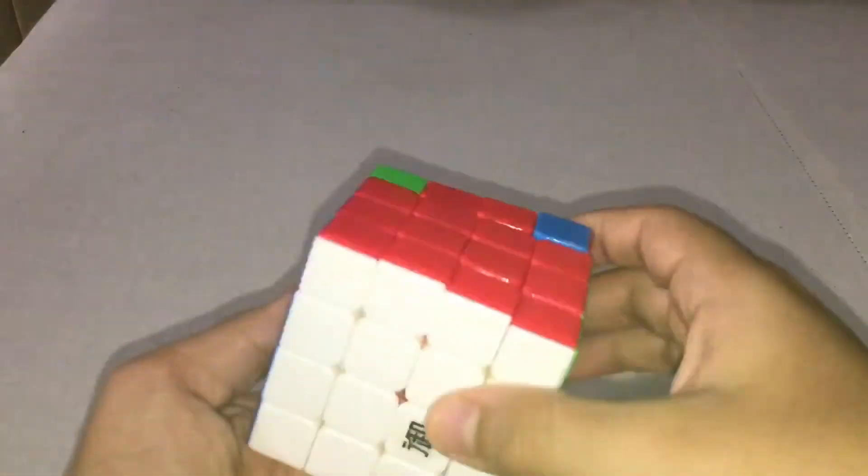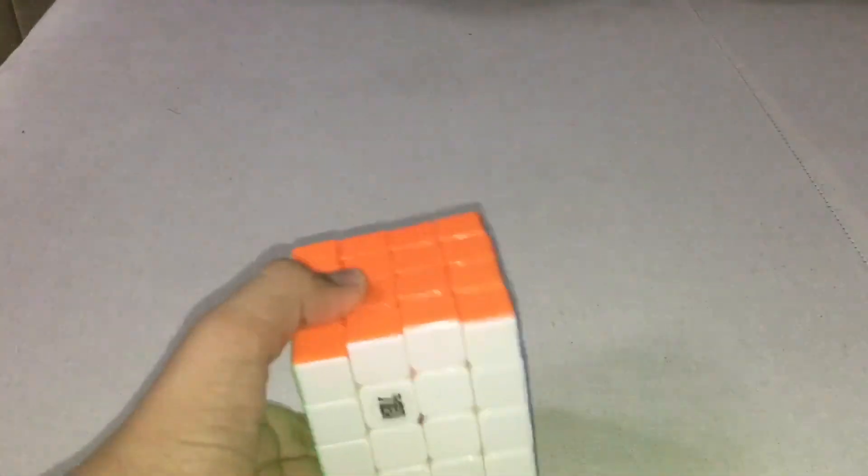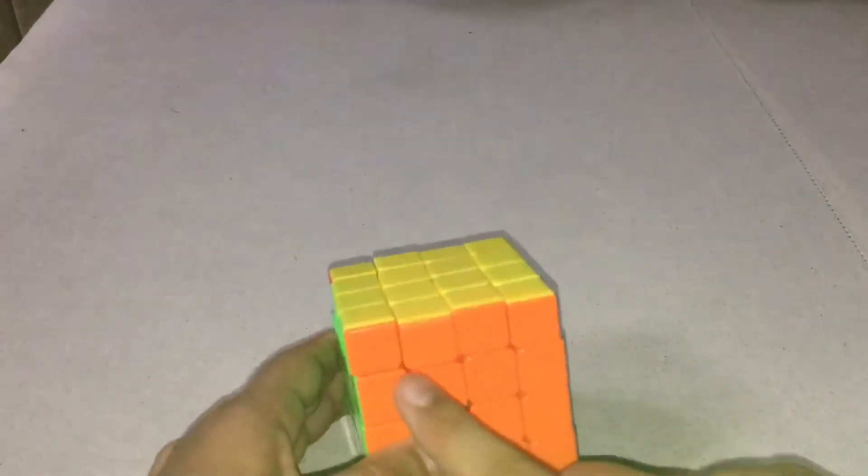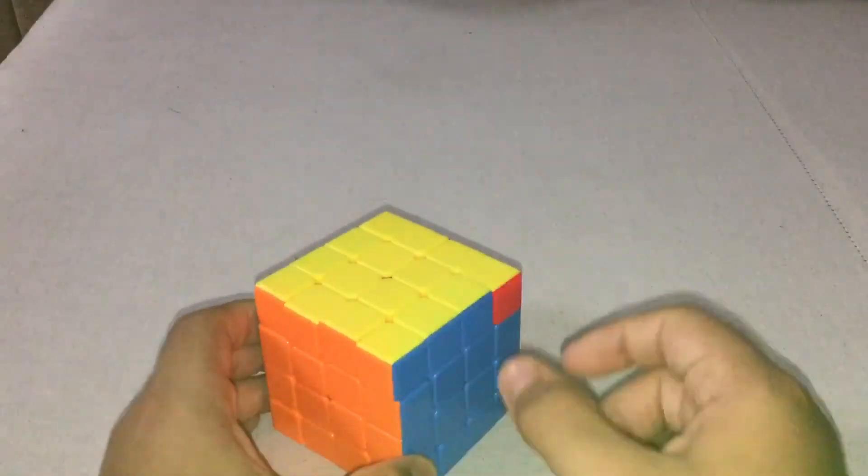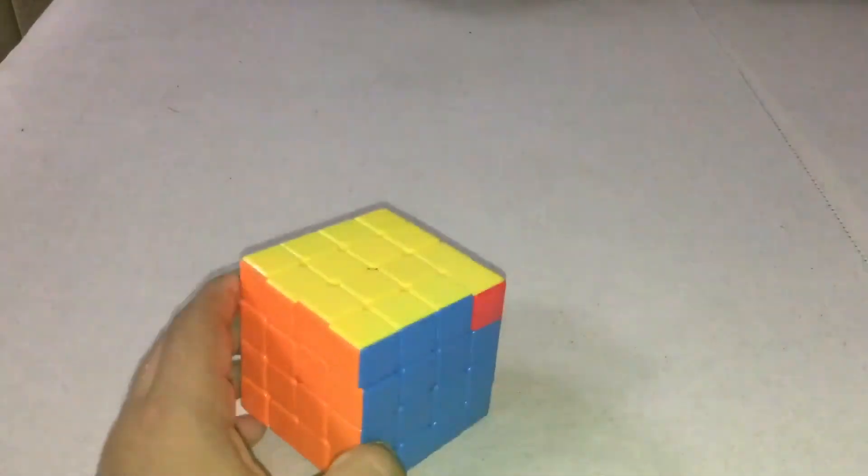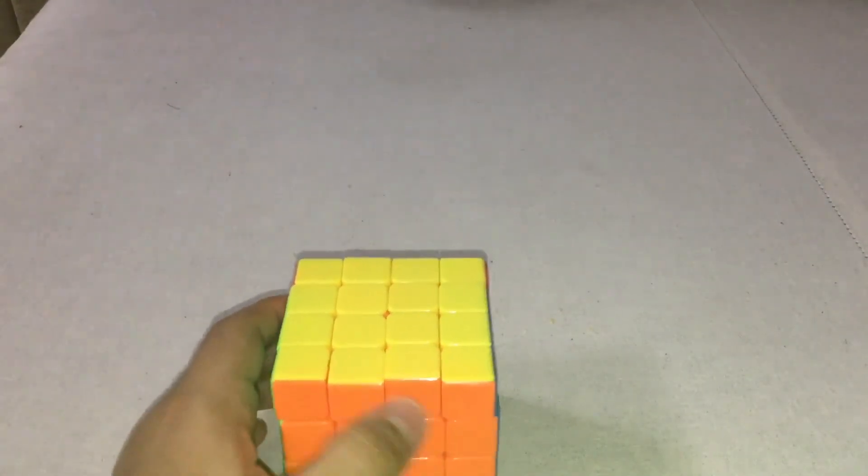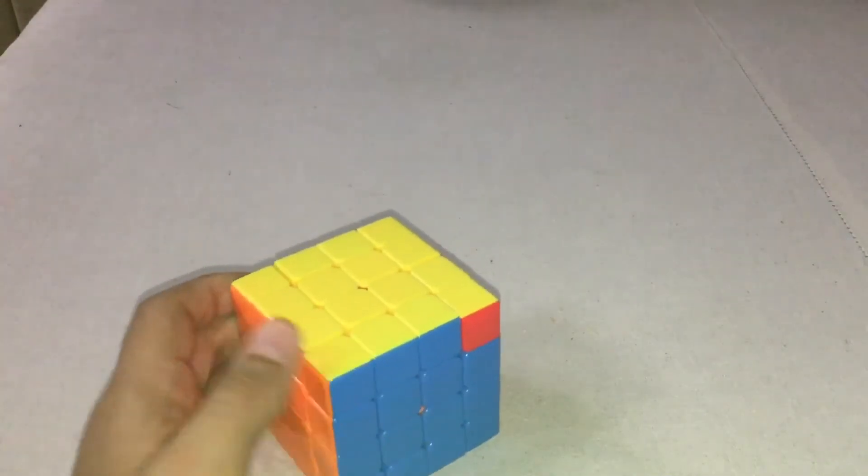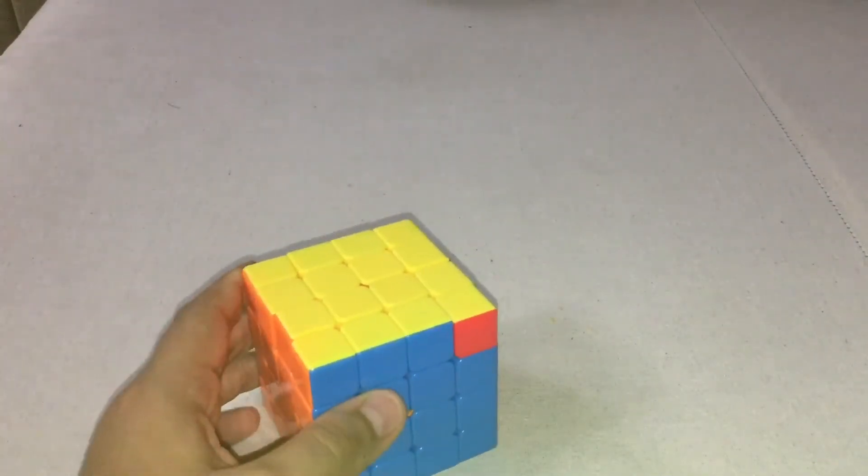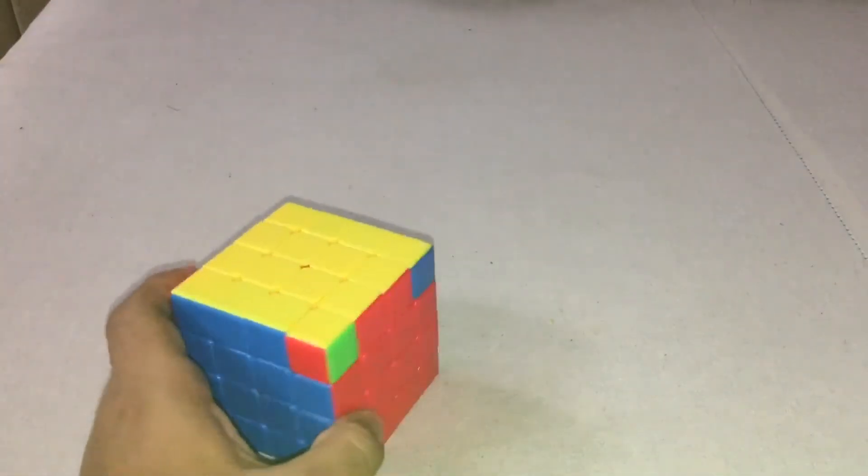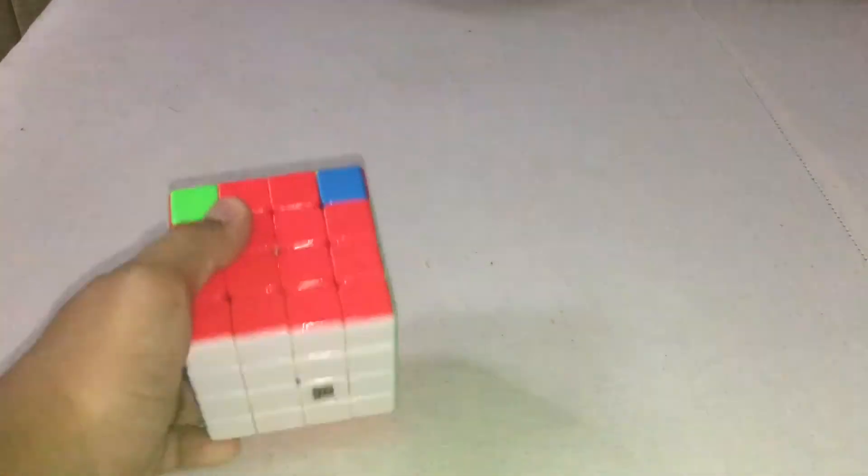Okay so if you guys know one look PLL, like full PLL, then you'll realize that this is not a case from PLL because it has a full side solved then three pieces like that, three pieces at the back which isn't any case. If this was orange red red orange then it would be the T perm, but this has the full side solved so it's nothing.